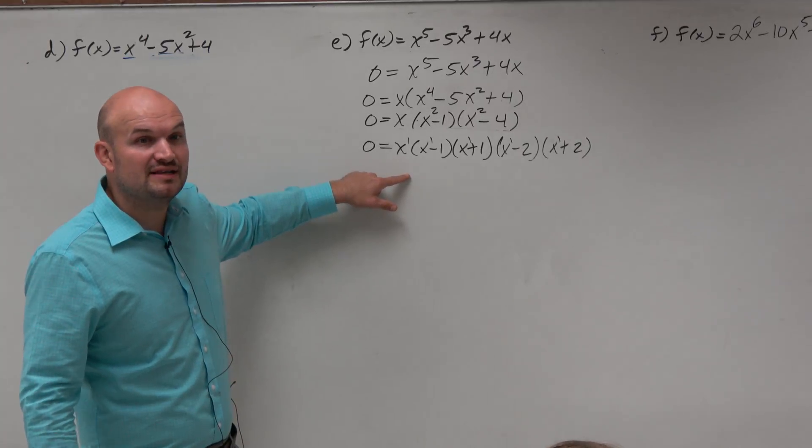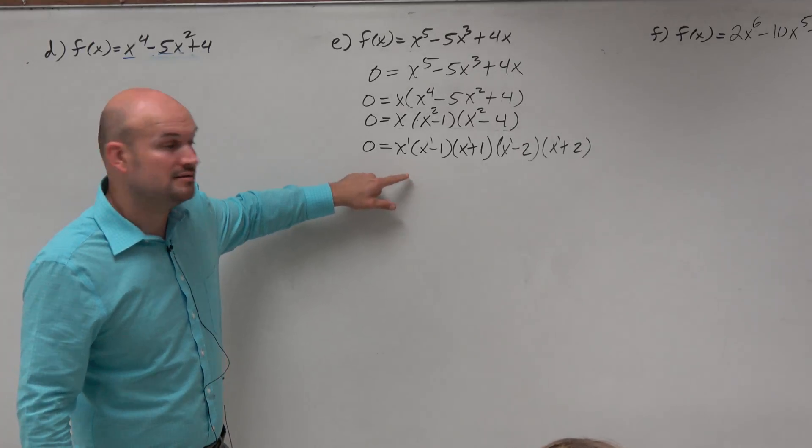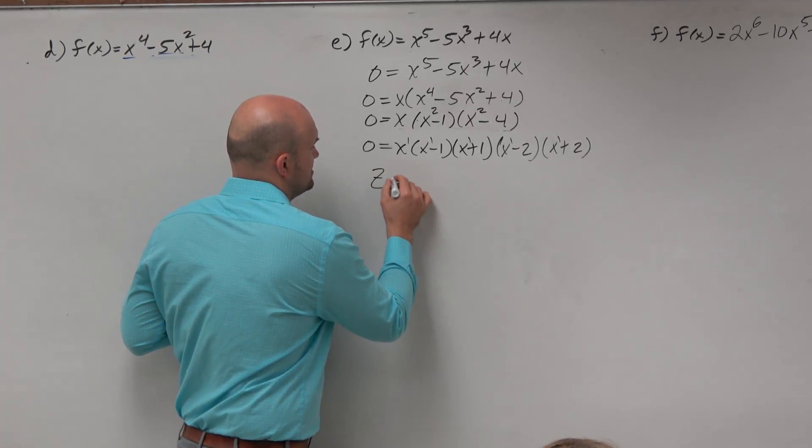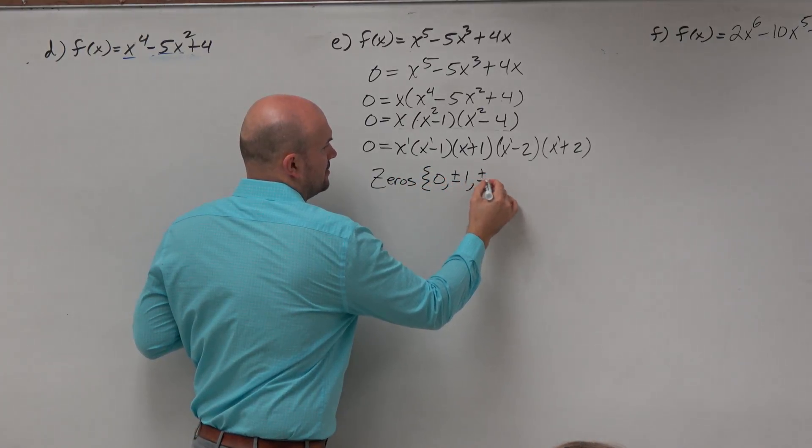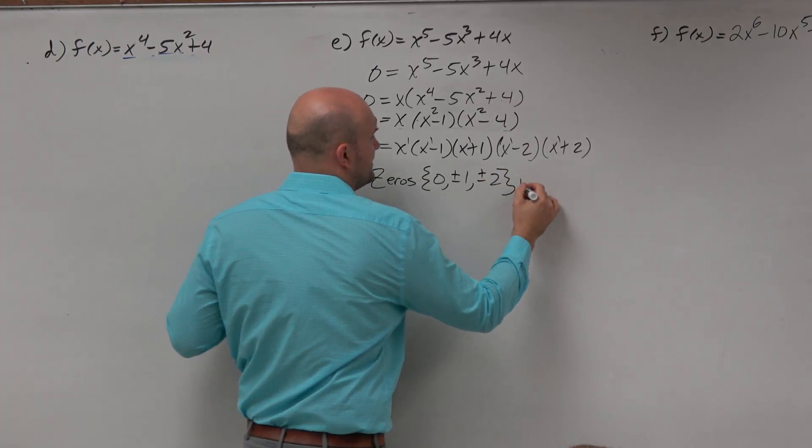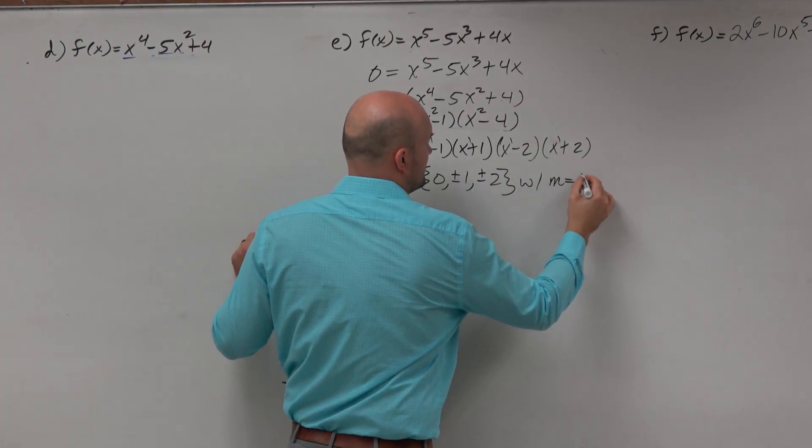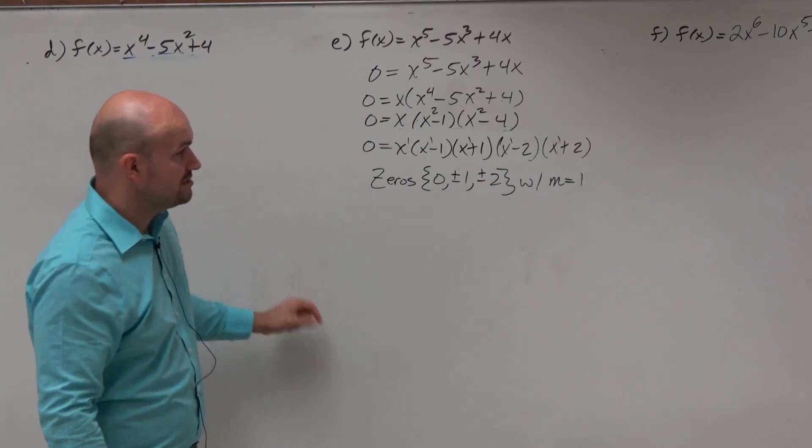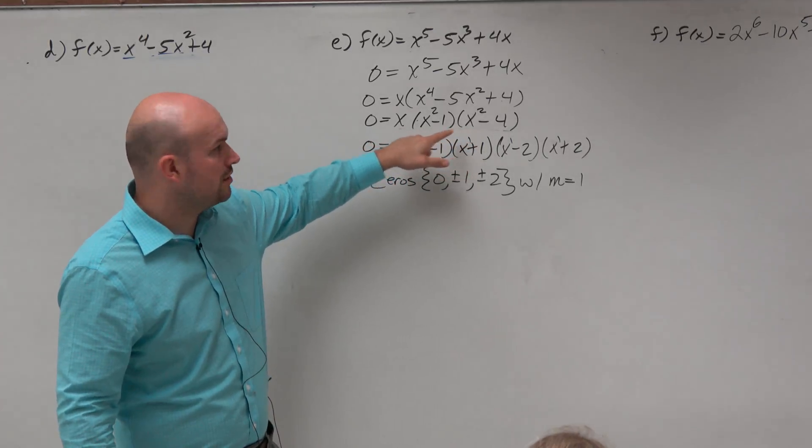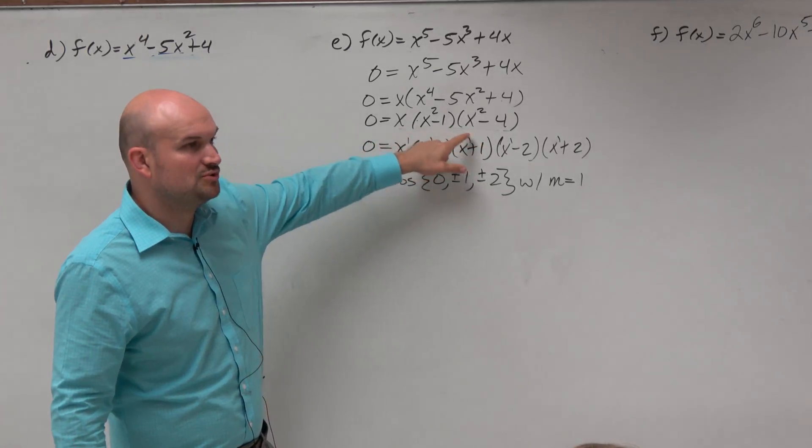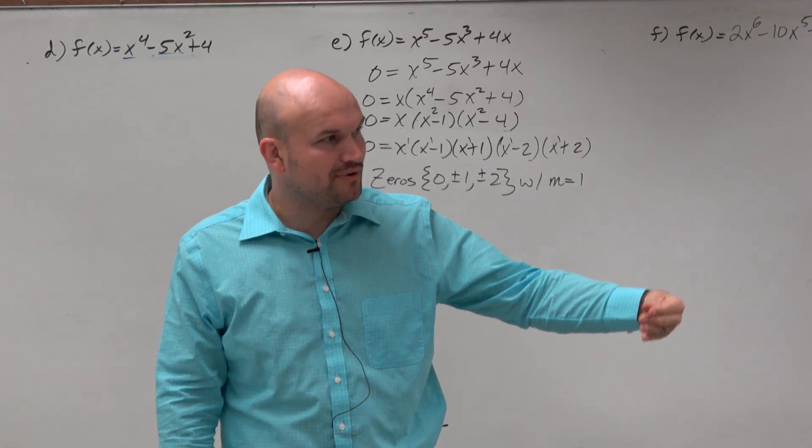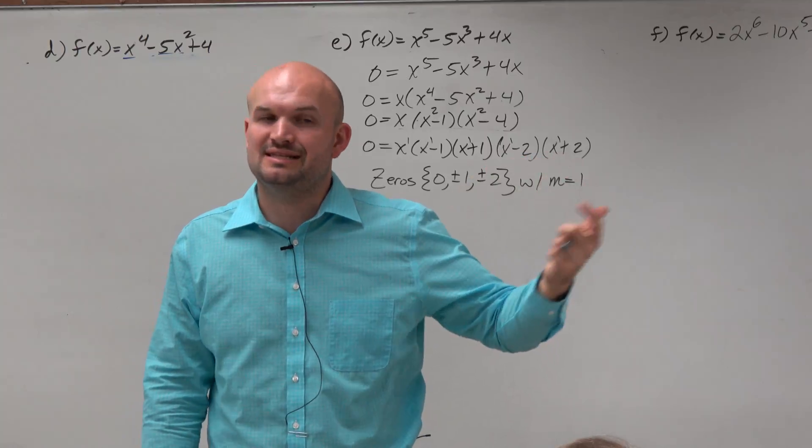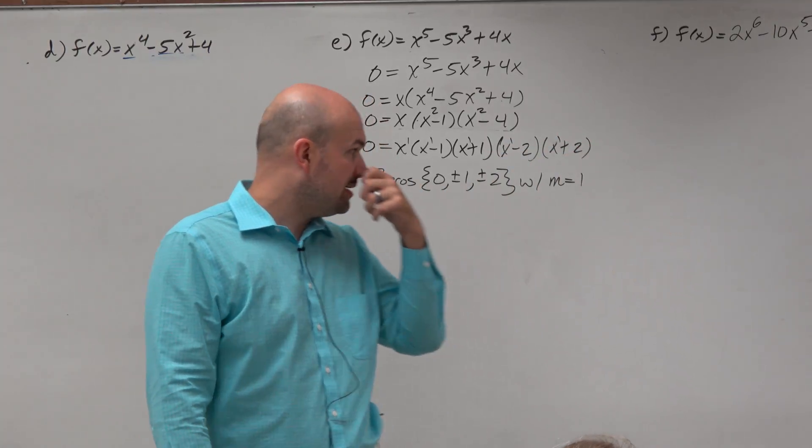So now, is it much easier for me to identify the zeros here? Right. So I could say the zeros are 0, plus or minus 1, plus or minus 2. And these all have a multiplicity equal to 1. So the zeros are not 1 and 2 or 1 and 4 with multiplicities of 2. They're not repeated. Right? And what we'll do is we'll look at some other examples where you see this repetition happening.